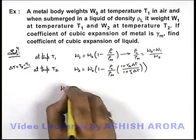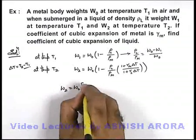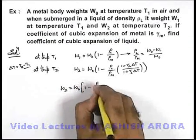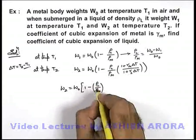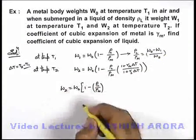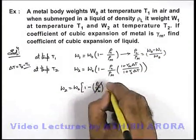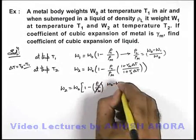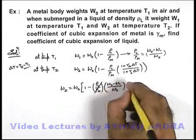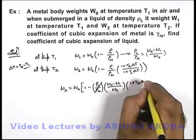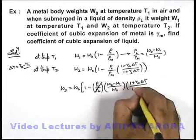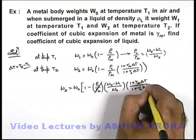We can write W₂ is equal to W₀(1 - ρₗ/ρₘ). And instead of ρₗ/ρₘ we can replace it by (W₀ - W₁)/W₀ multiplied by the same term (1 + γₘΔT)/(1 + γₗΔT).